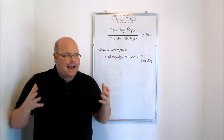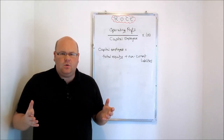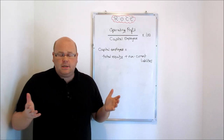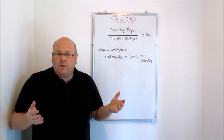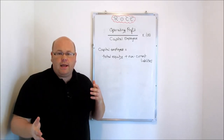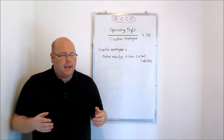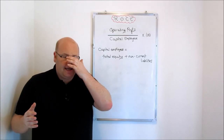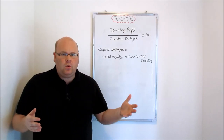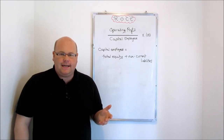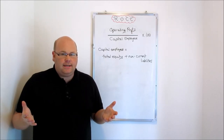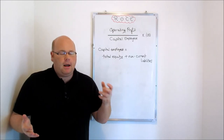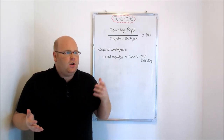This ratio looks at the capital that's been employed into the organization — that's the funds raised from borrowing: mortgages, loans, debentures, as well as money raised from shareholder investments and from retained profits. The organization takes that sum, that war chest of money, and invests or employs it in the organization.